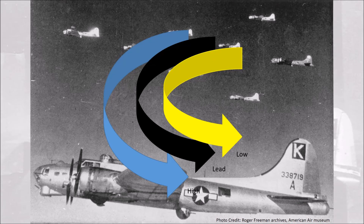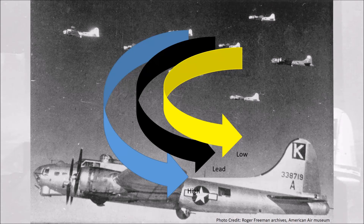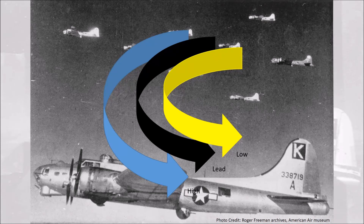The high squadron has to speed up as it has a longer track to fly. If the lead squadron is flying too slow, the low squadron has to fly even slower to stay in formation, with the risk of stalling and crashing. If the lead squadron is flying too fast, the high squadron has to fly even faster to stay in formation, with the risk they cannot keep up.